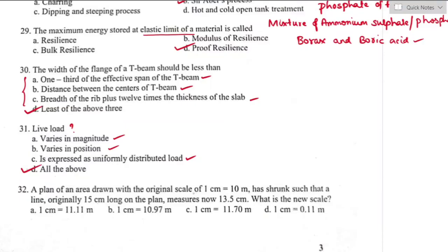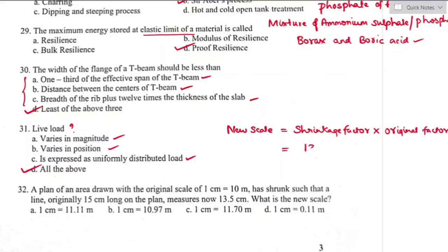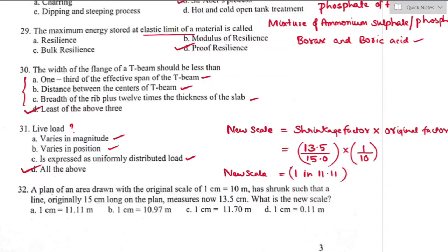Question number thirty-two: a plan drawn at original scale of 1 cm = 10 m has shrunk such that a line originally 15 cm long now measures 13.5 cm. The new scale = shrinkage factor × original scale = (13.5/15) × (1/10) = 1/11.11. The right answer is option A.